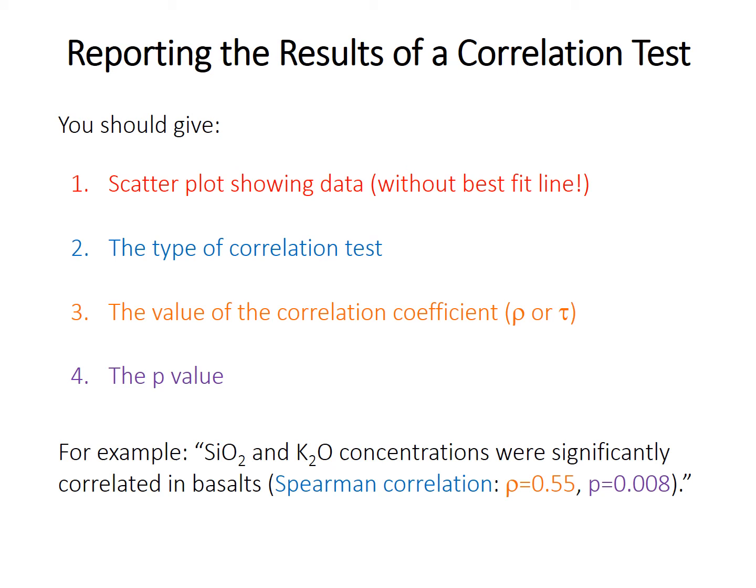When reporting the results of nonparametric correlation, follow the same format as for Pearson's correlation: provide a scatter plot of the data, report the type of test (Spearman or Kendall), the value of the correlation coefficient (rho or tau), and the p-value. The correlation coefficient is very important because it tells you how strong the relationship is and in what direction — positive or negative. The p-value gives indirect evidence for the likelihood that the relationship exists, but what we really care about is how strong that relationship is.